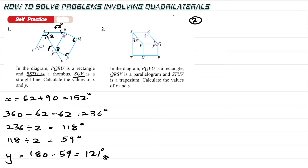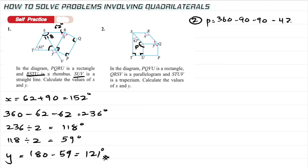Number two: PQVU is a rectangle — all angles are 90 degrees. QRSV is a parallelogram and STUV is a trapezium. For the trapezium, three of the angles are 90 degrees. To find the remaining interior angle P: P = 360 − 90 − 90 − 42 = 138 degrees.